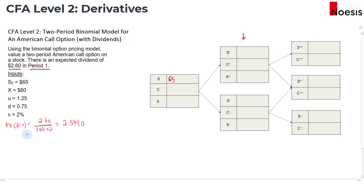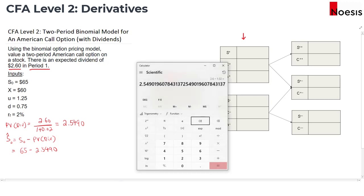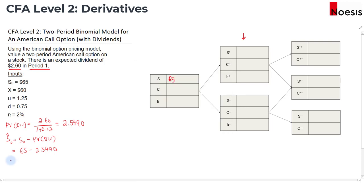So the present value of the dividend will be 2.60 divided by 1.02. If we calculate that, to about four decimal places, that's about 2.5490. The adjusted price at time zero will be the initial price minus the PV of the dividend, so that will be $65 minus 2.5490, which gives us 62.451.